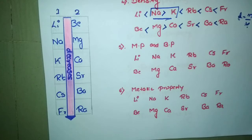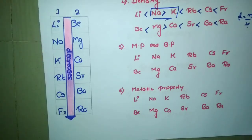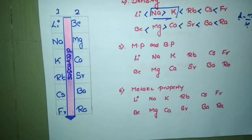Group 1 and group 2 s-block elements are highly metallic in nature, meaning there is an availability of free electrons. As we go down the group, the size increases — the distance between the nucleus and the outermost electron increases. As this distance increases, the outermost electrons are left more free. When the outermost electrons are left free, very little temperature is required to melt the element, so the melting point and boiling point decrease down the group.